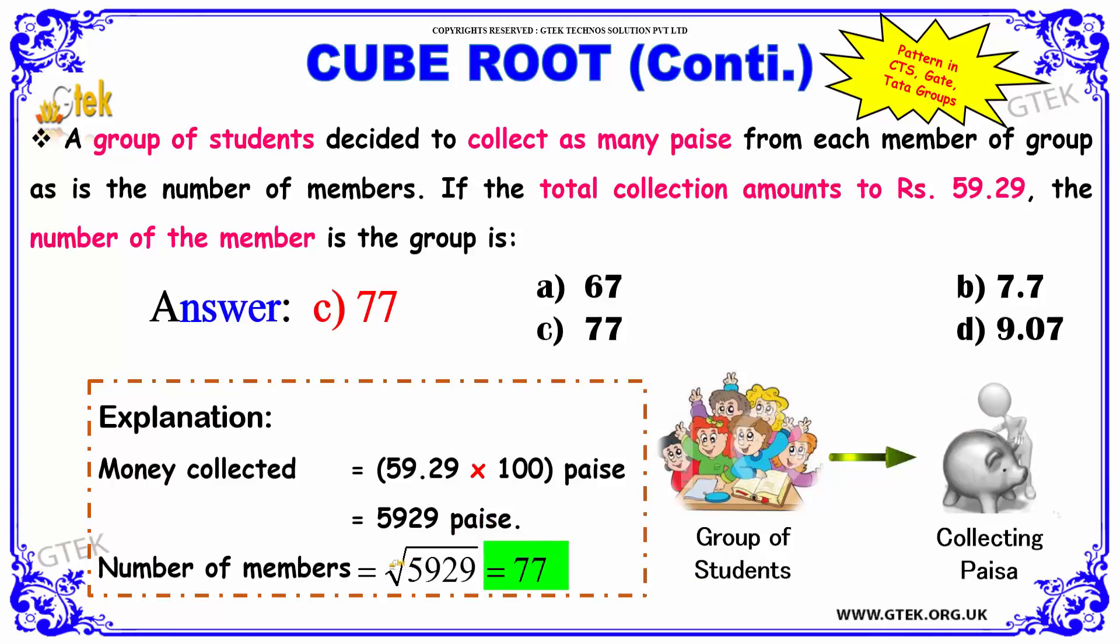The number of members can be obtained by square root of 5929, which is equal to 77. Your answer is option C, 77.